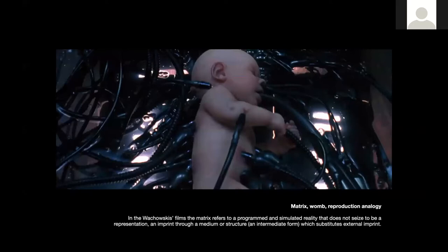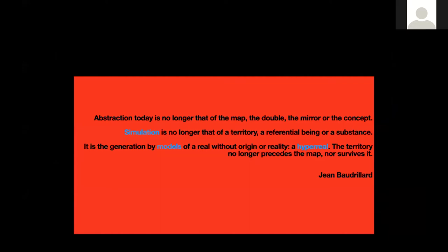Here we can see an image from the film The Matrix. There is a relation between the word matrix, the womb, and reproduction. In printmaking, images are reproduced. In the film, reality is also reproduced through code as a simulation. Abstraction today is no longer that of the map, the double, the mirror, or the concept. Simulation is the generation by models of a real without origin or reality — a hyperreal.